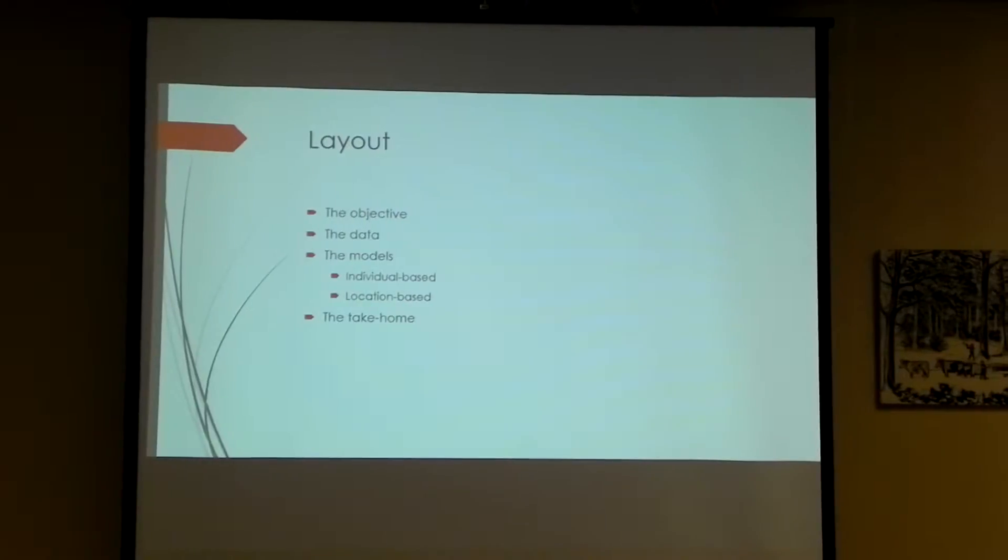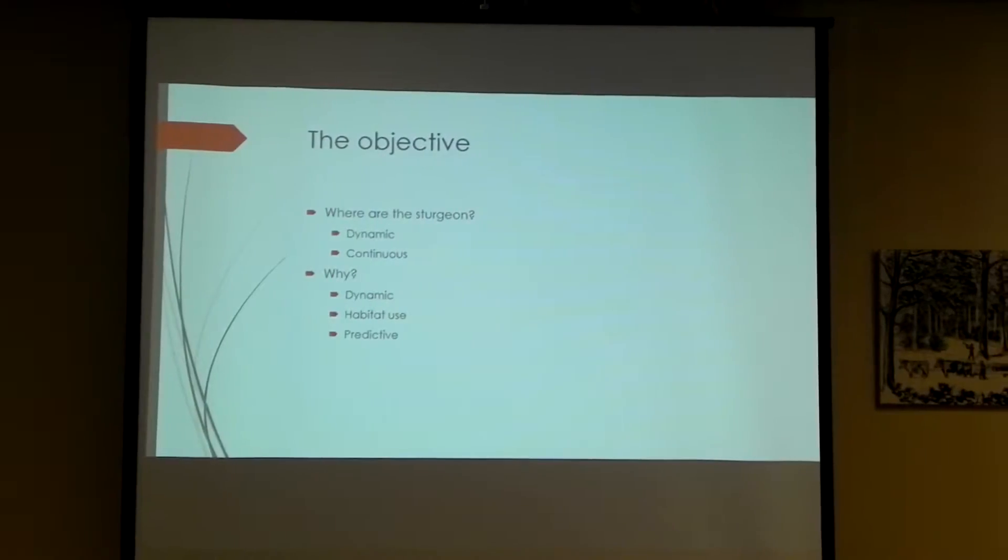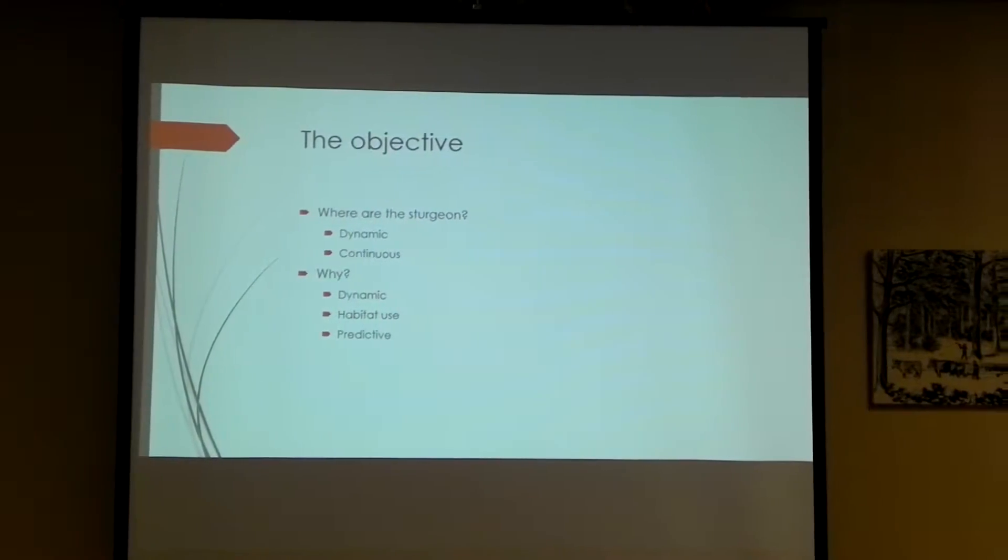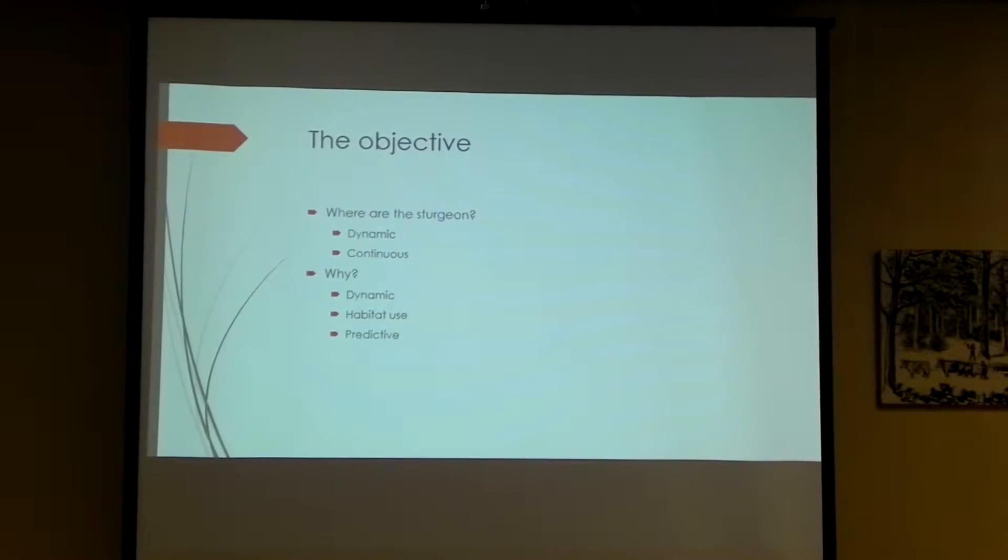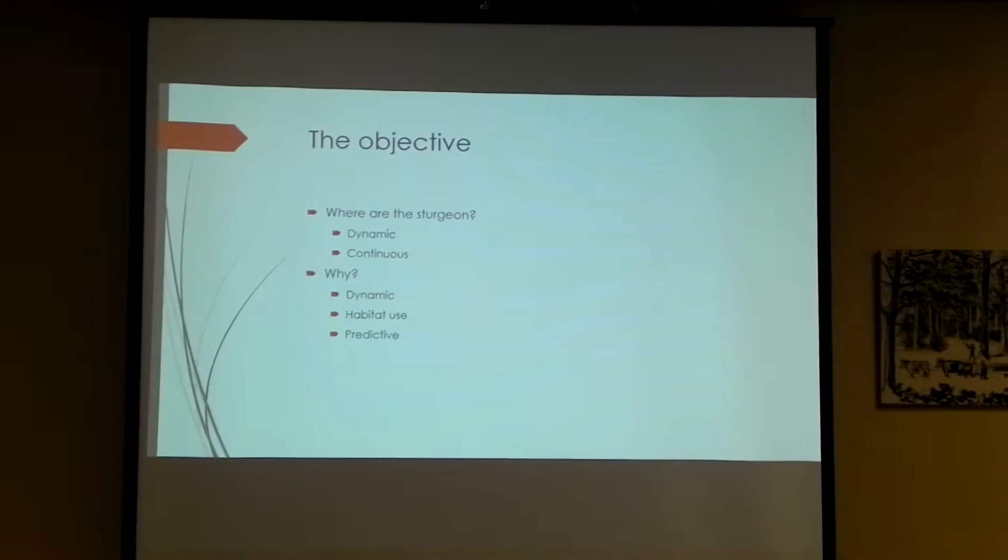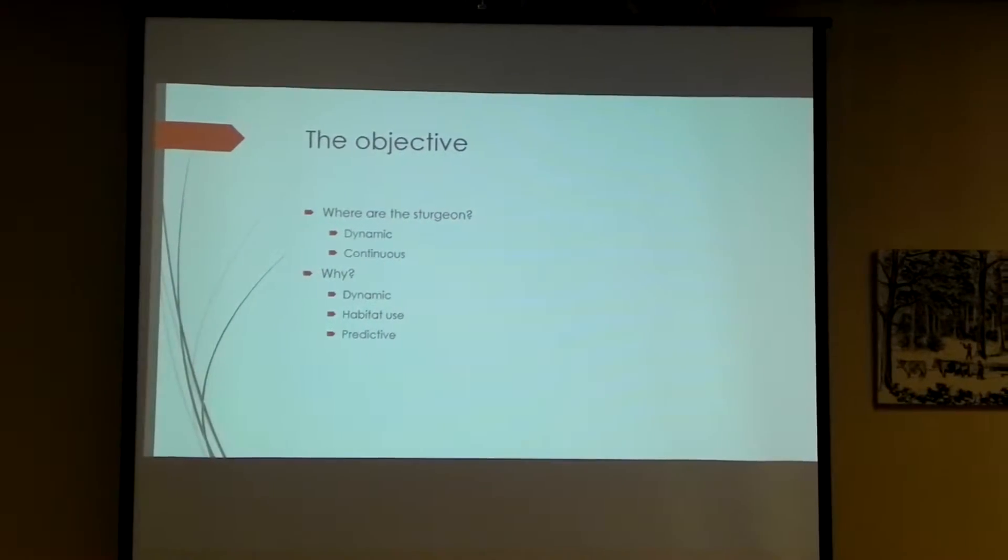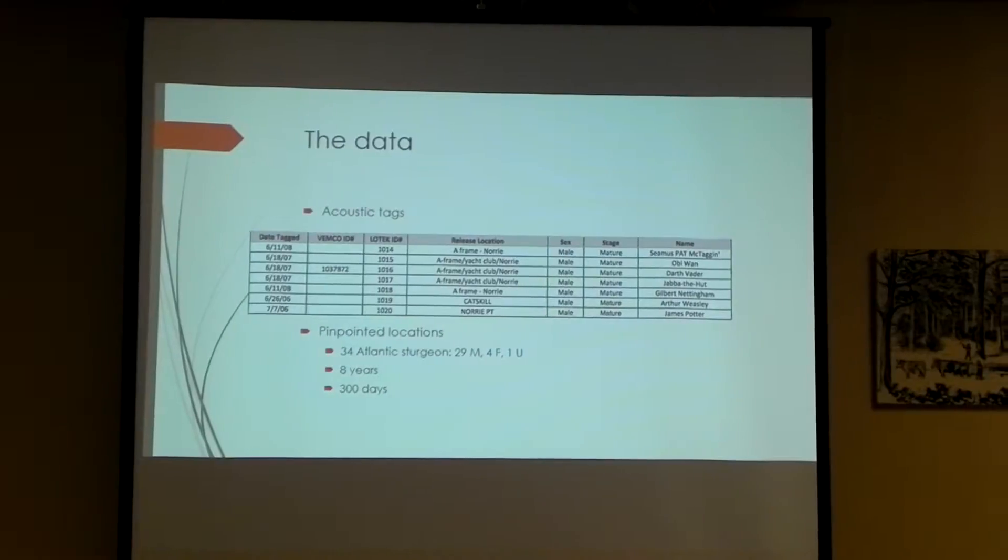I'm going to be spending a bulk of my time here discussing the two models that we worked on, but we'll also go through our objective and the structure of the data that we were working with. So our objective: where are these Atlantic sturgeon? This is a dynamic process, they're moving up and down the river. It's also a continuous process, and why are they where they're at? This is also a dynamic process, why they're where they're at changes throughout the season, throughout the years. And this is a habitat use question, essentially. So we can translate the why into, why are they using this habitat? And if we understand why they're using the habitat that they're using, then we can make predictions about why they might be where they are next. So where and why is sort of our focus here.